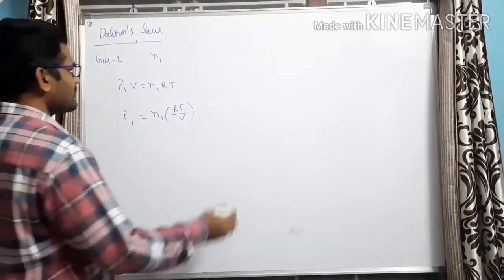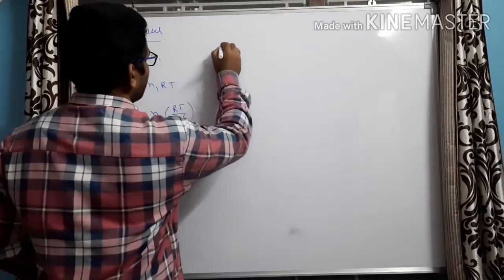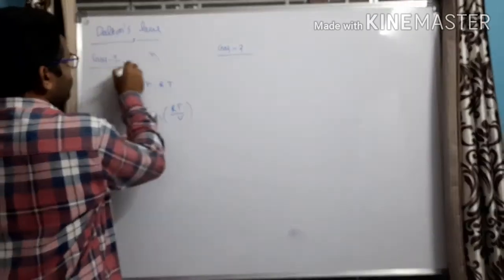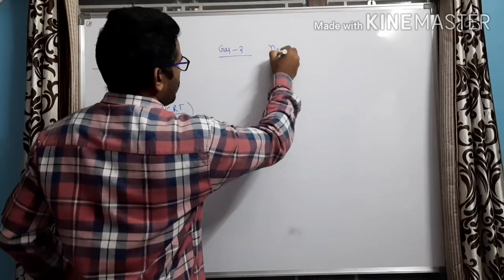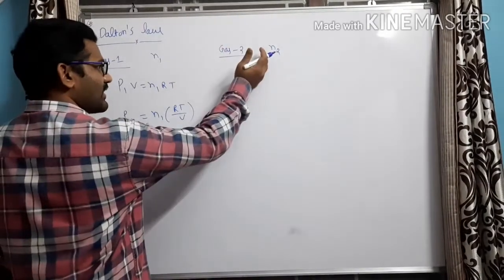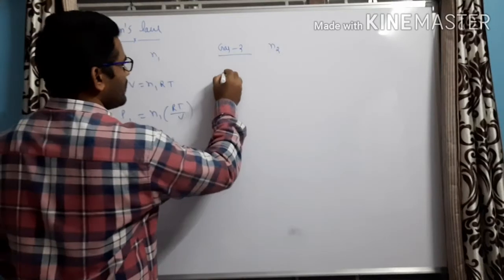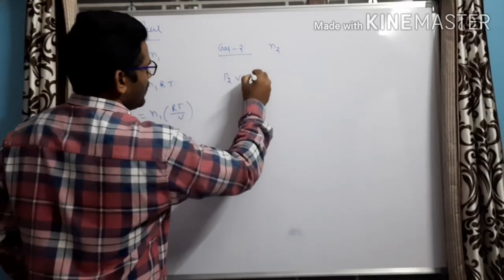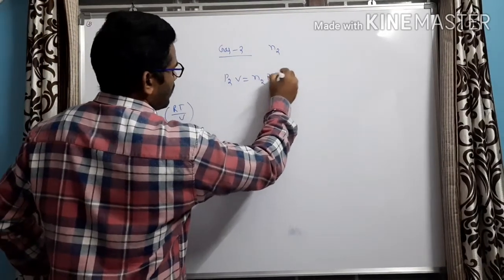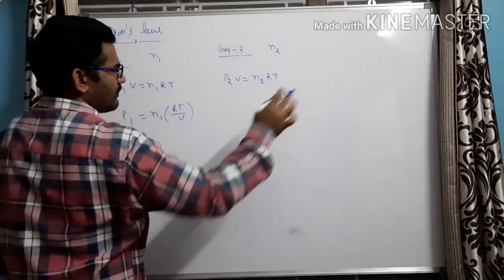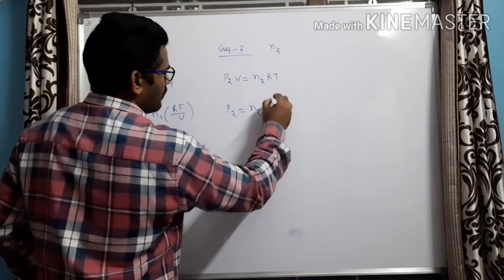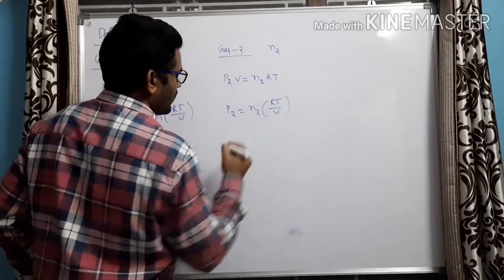Now let us take the second gas, which I am indicating as gas 2, having N₂ moles. When I apply the ideal gas equation to the second gas, I can write: P₂V = N₂RT, which gives P₂ = N₂RT/V.